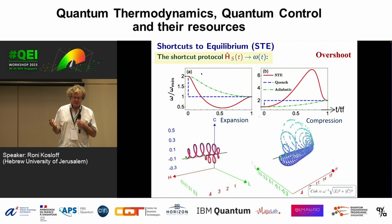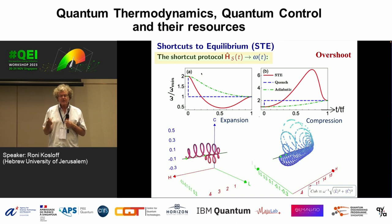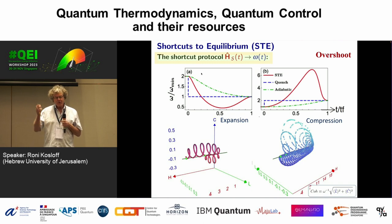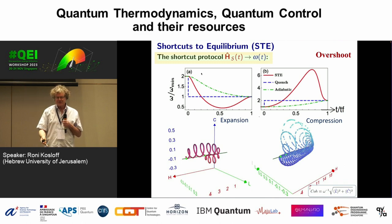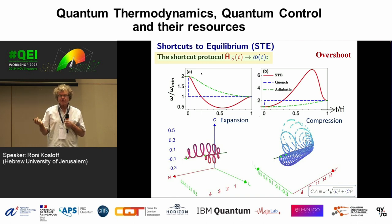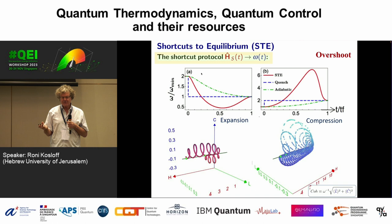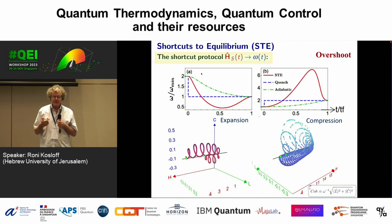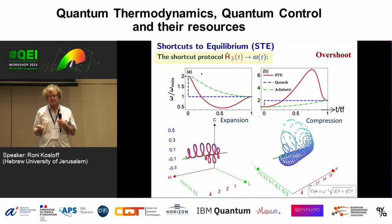I want to thermalize fast — this goes back to Mpemba. If I want to thermalize fast, I want to be as far from equilibrium as possible all the time. If I just wait, I equilibrate with the environment — the rate goes as the temperature difference per Newton's heat law, but eventually slows down. To accelerate equilibration, I try to stay far from equilibrium as much as possible.